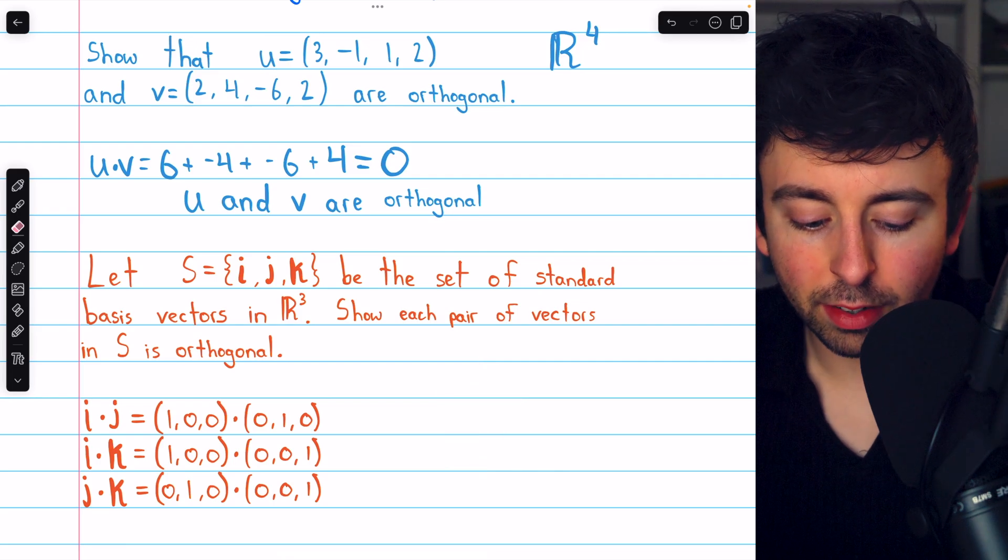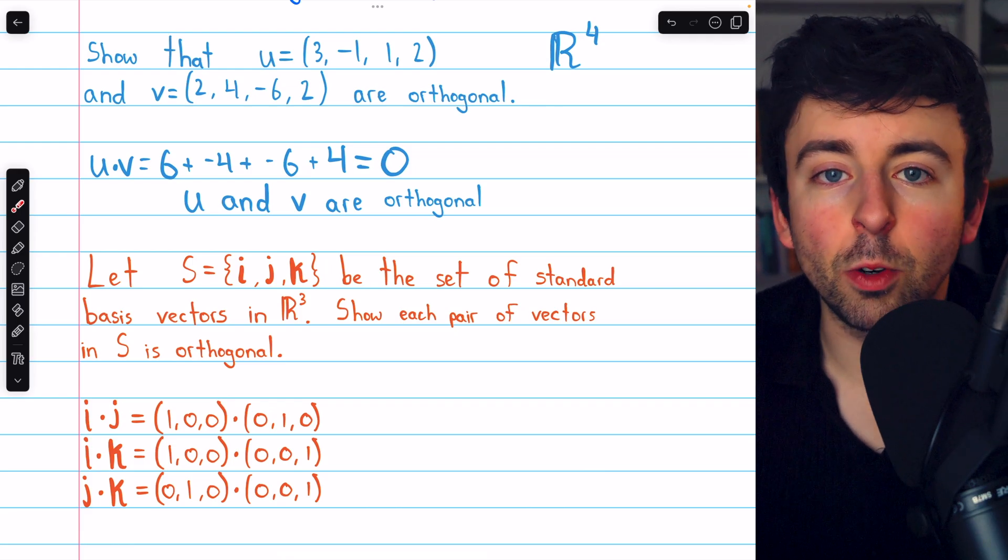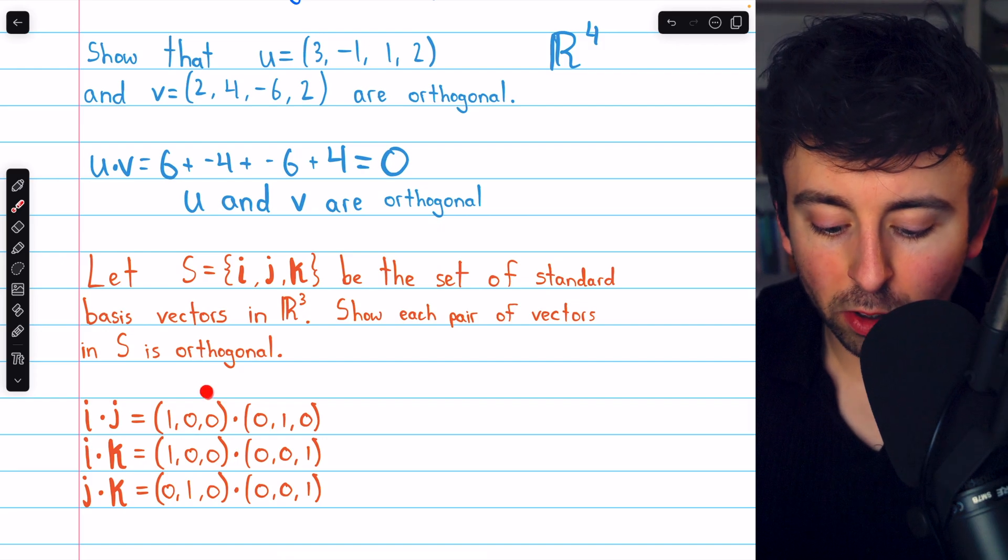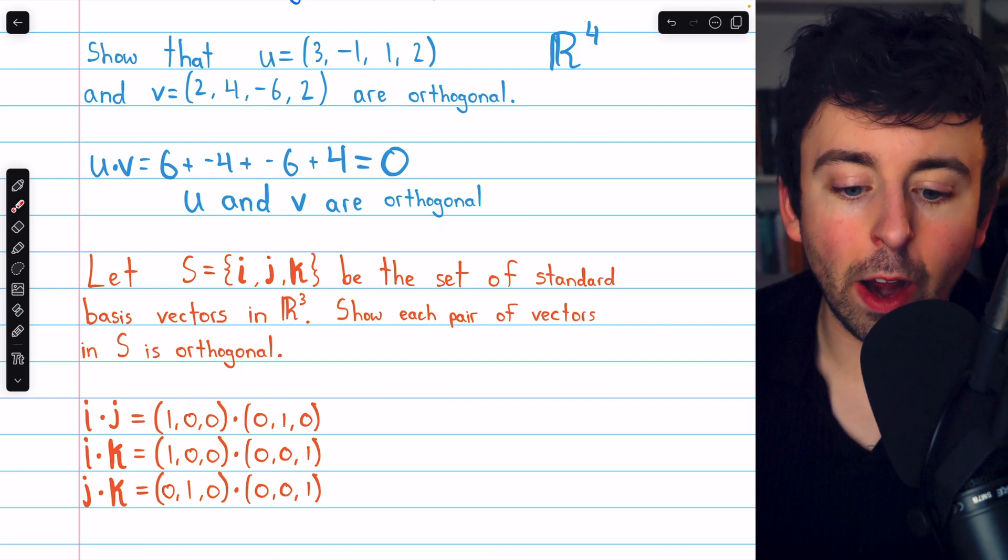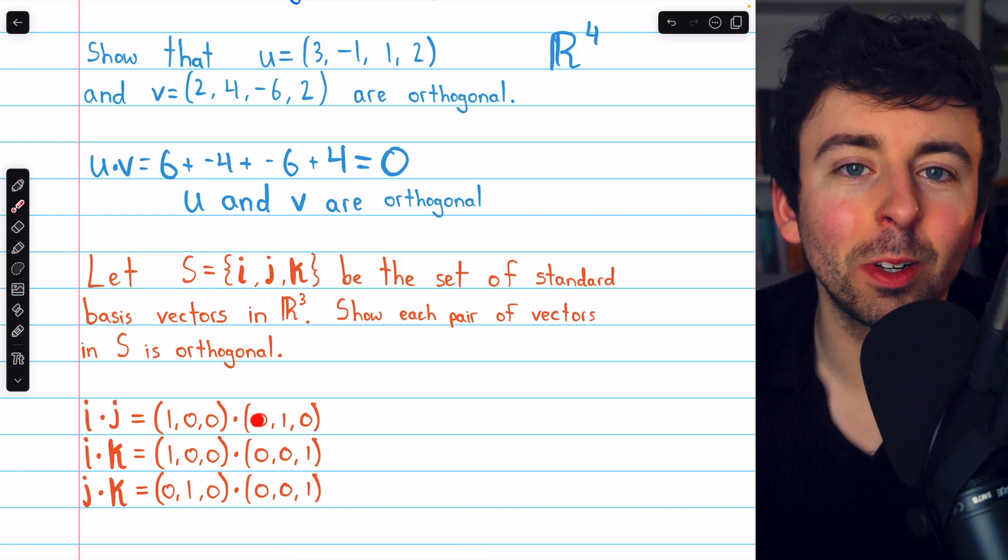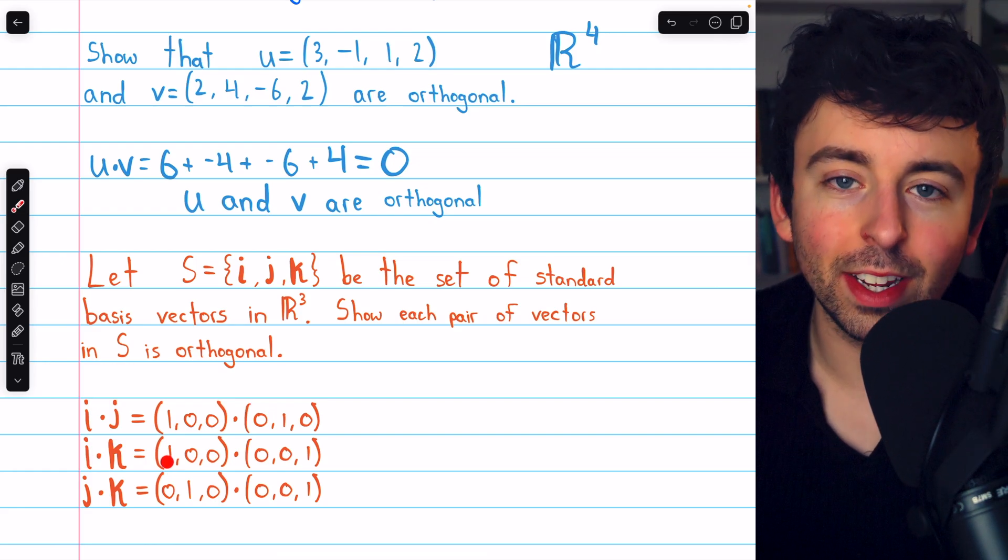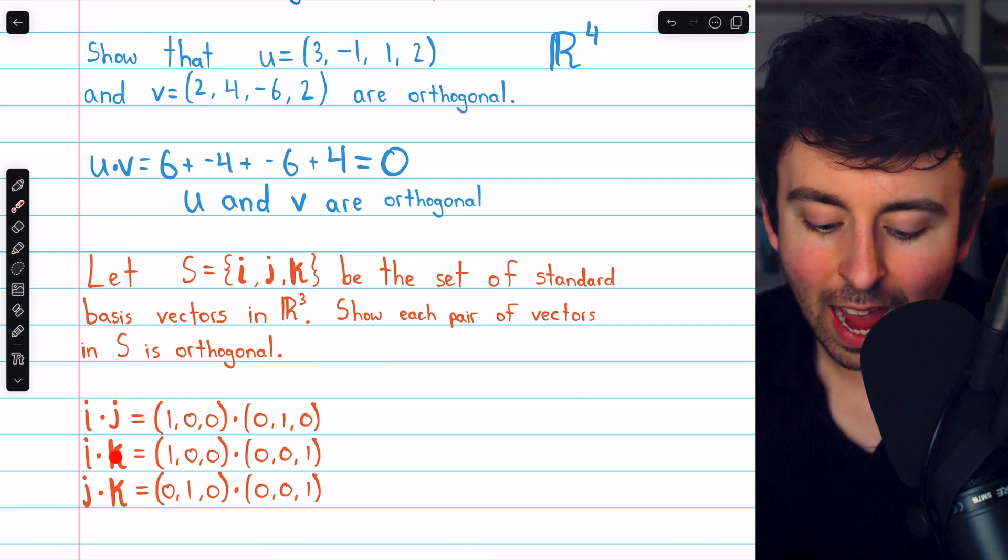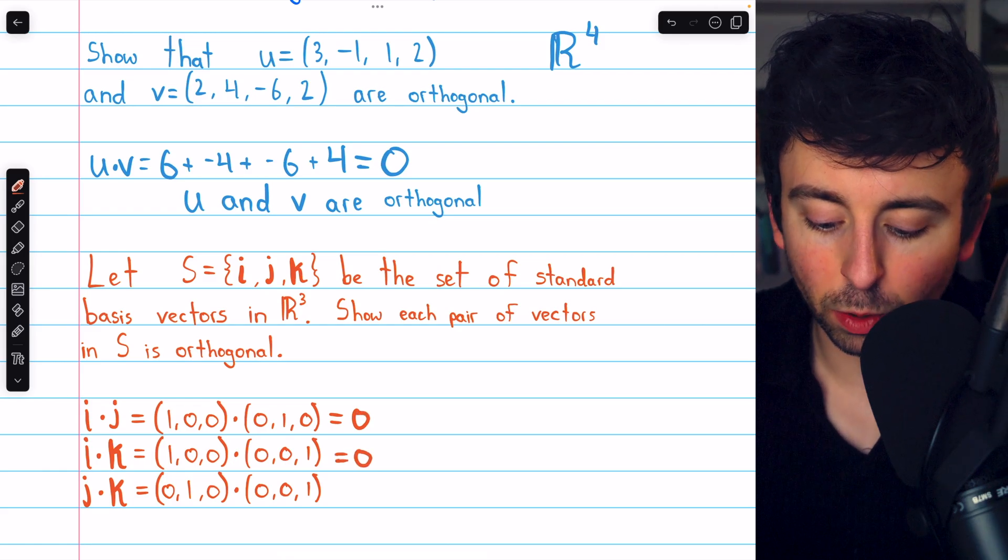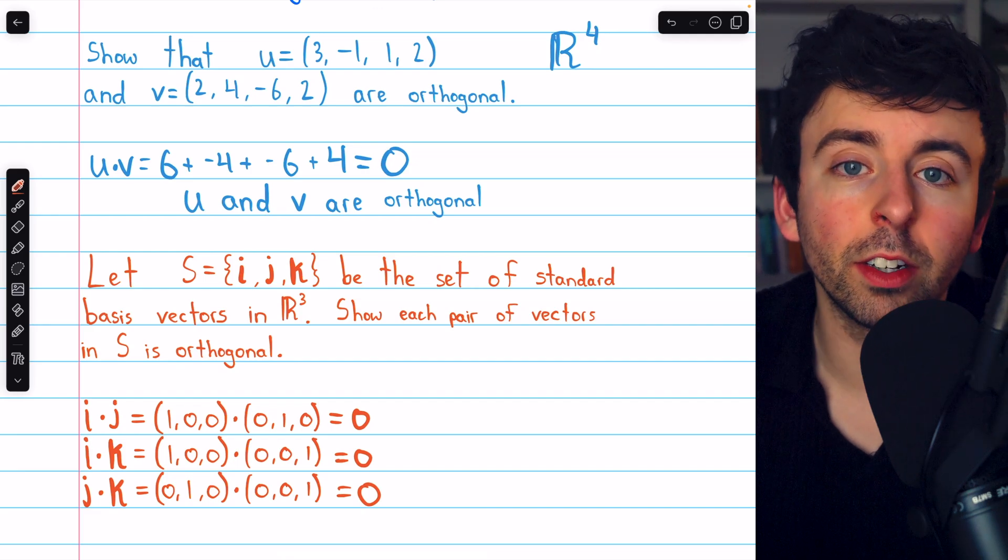Of course, to verify this, we could look at the individual products, i dot j, i dot k, and j dot k, understanding that the dot product is commutative, so this would cover both orders. And we're just dotting these together. Now, in each case, where a standard basis vector has a 1, the other standard basis vector will necessarily have a 0. We see that in each case. i has a 1 in the first component and 0s elsewhere, whereas k has a 1 in the third component and 0s elsewhere. So, of course, all of these dot products are equal to 0, and so all of these standard basis vectors are orthogonal to each other.